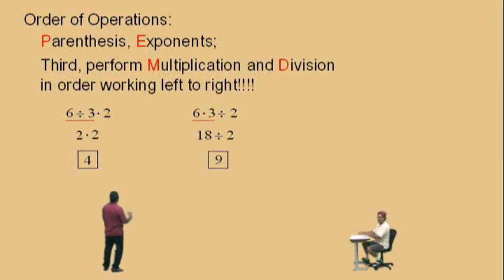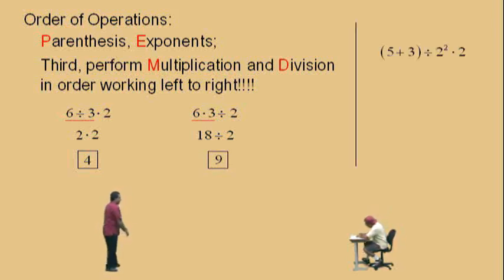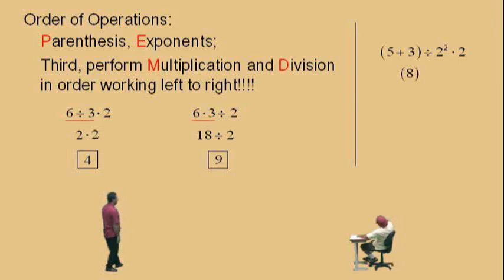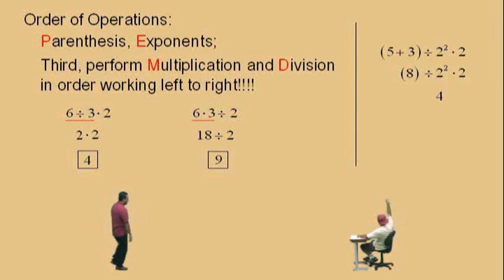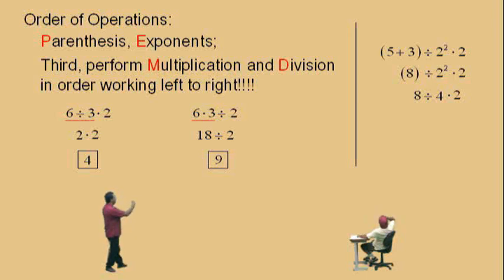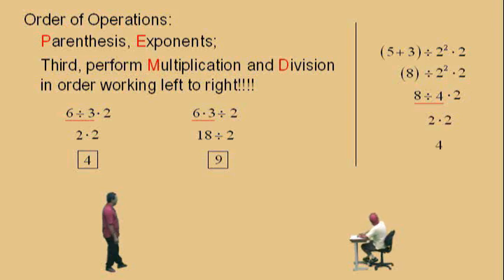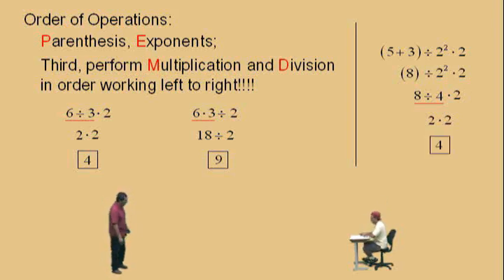Now let's step it up a bit. What do we have to do first, Charlie? Parentheses. That's right — 5 plus 3 is 8. Bring down our work. Now we have 8 divided by 2 squared times 2. What do we have to do next? The exponent. What's 2 squared, Charlie? 4. So we do that first and bring down our work: 8 divided by 4 times 2. Division and multiplication — we do it at the same time working left to right, so we do division first. 8 divided by 4 is 2, and 2 times 2 is 4. That is our answer.